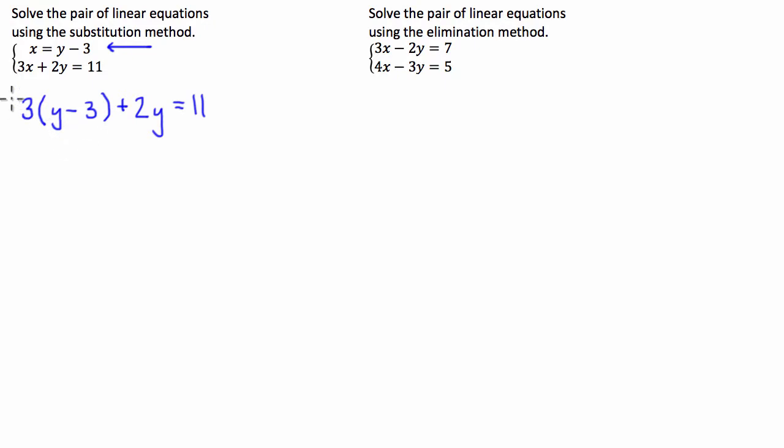Now you can see here guys that now I have an equation rather than being in terms of two variables, it's now in terms of one variable which I can go about solving. So I multiply out my brackets. 3 times y is 3y, 3 times negative 3 is negative 9.